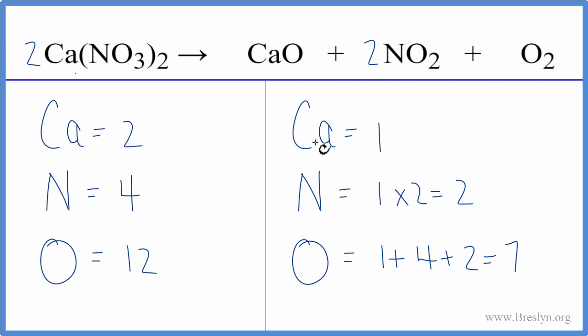Let's balance the calciums. We're still leaving the oxygens till last. So I have two here and one here. If I put a two in front of the calcium oxide, one times two, that'll give me two. So those are balanced.